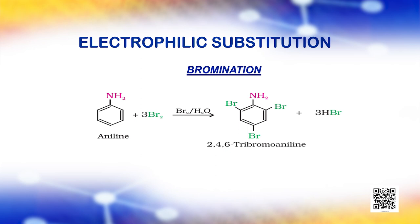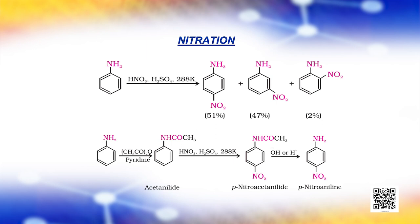Tertiary amines do not react with benzene sulfonyl chloride. Aniline reacts with bromine water at room temperature to give a white precipitate of 2,4,6-tribromoaniline. Direct nitration of aniline yields over-oxidation products in addition to nitro derivatives. That is why, besides the ortho and para derivatives, a significant amount of meta derivative is also formed. However, by protecting the NH2 group by acetylation with acetic anhydride, the nitration reaction can be controlled.